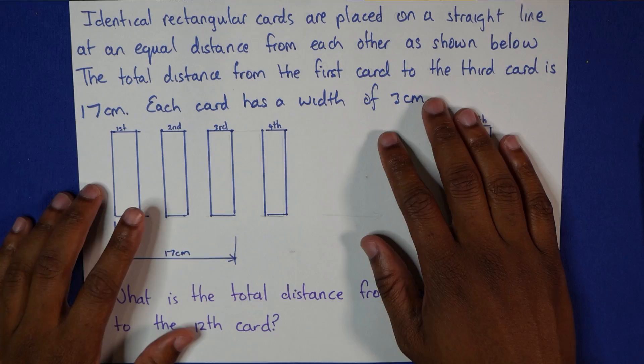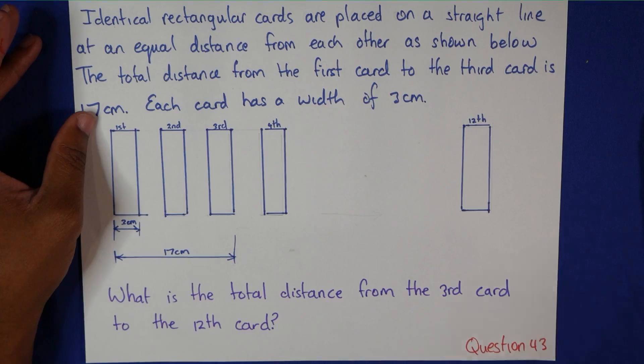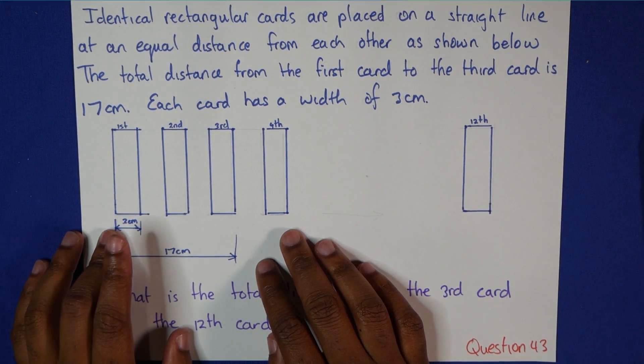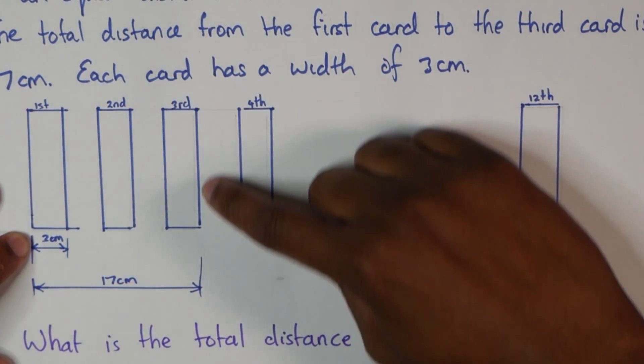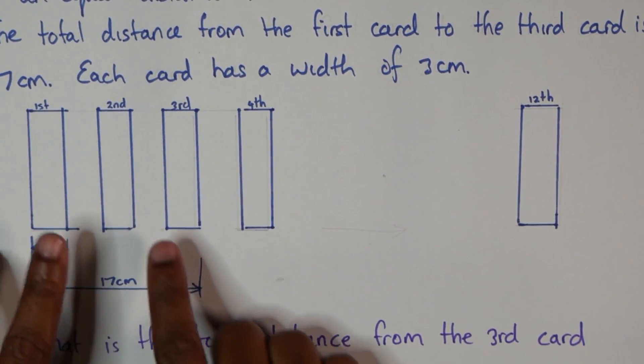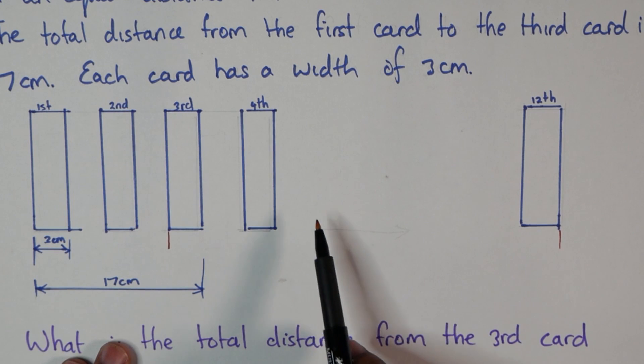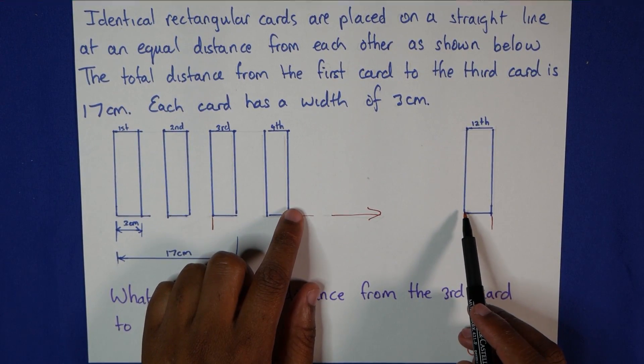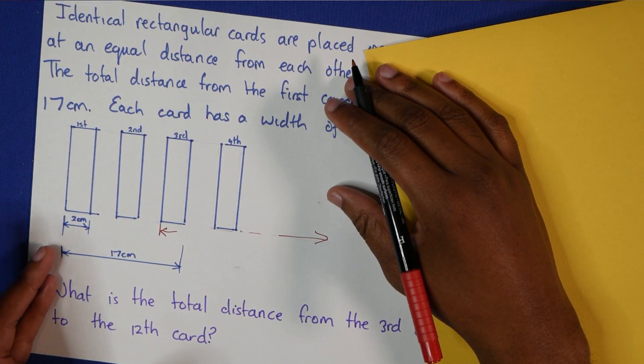Question 43 was a piece of work, and once again I apologize to any SEA student who's getting flashbacks watching this right now. I told you not to watch this. Identical rectangular cards are placed in a straight line at equal distances from each other, shown below. The total distance from the first card to the third card is 17 centimeters. Notice what they mean by that: start at the beginning, finish at the ending, 17 centimeters. Each card has a width of 3 centimeters. What is the total distance from the third card to the 12th card? It means we're looking at from here to here. Now in the exam there was a strange line drawn here between the fourth and the 12th. I hope no one went from the ending of the fourth. So we're trying to find this distance from here to here. You can pause the video and try and figure it out. I'm going to start right now.